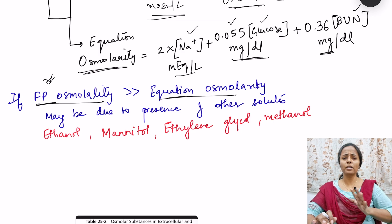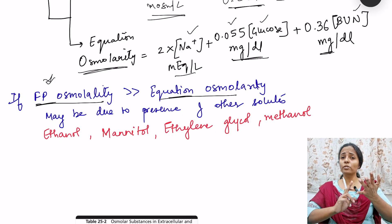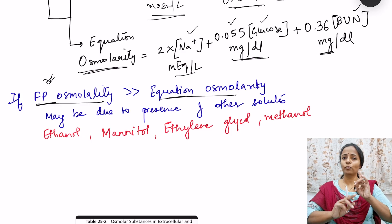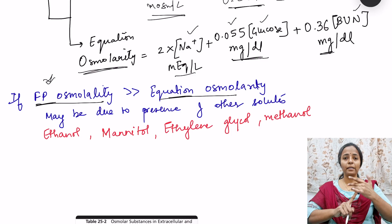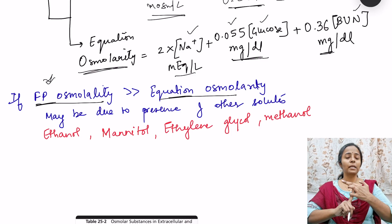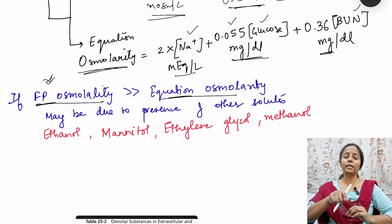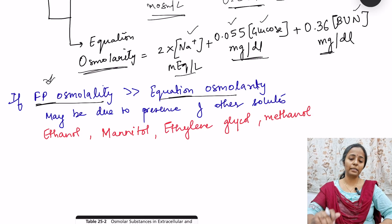So that covers moles, osmoles, molarity, osmolarity, and normality of a solution. To summarize: calculate gram molecular weight for molarity; multiply moles by number of dissociated particles for osmolarity; and divide gram molecular weight by valency to get equivalent weight for normality.